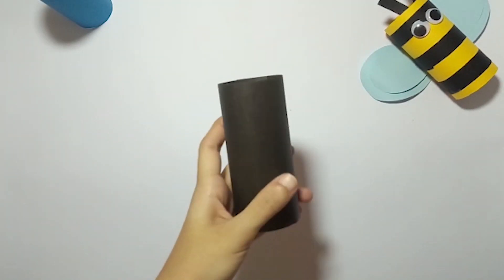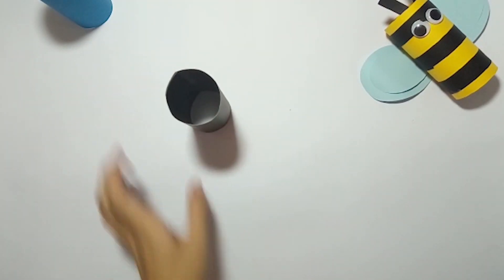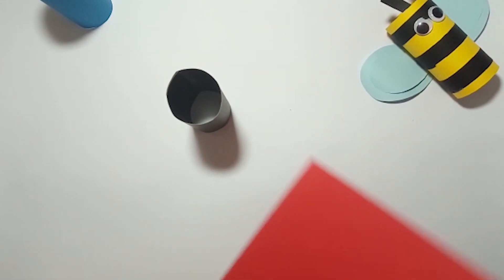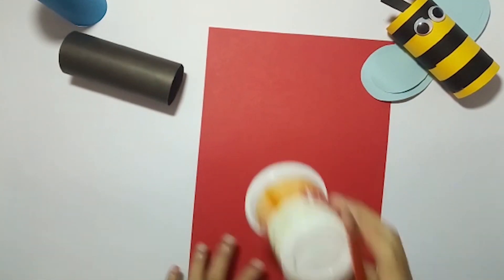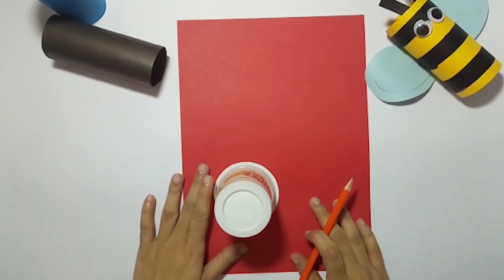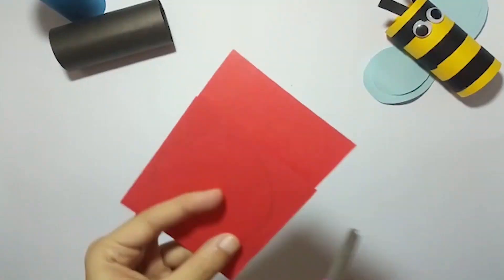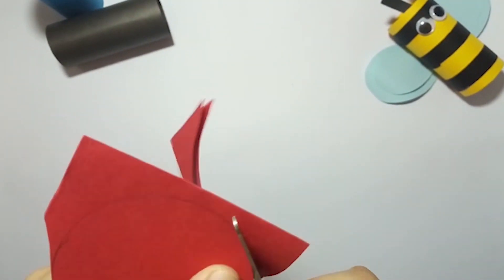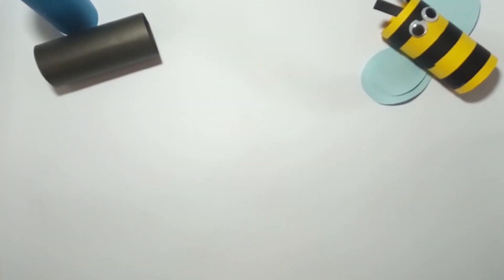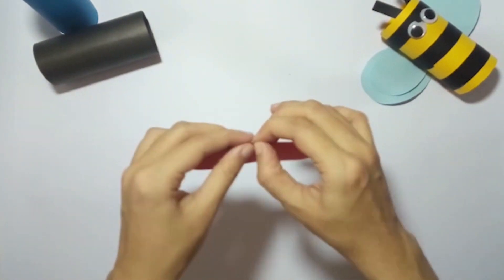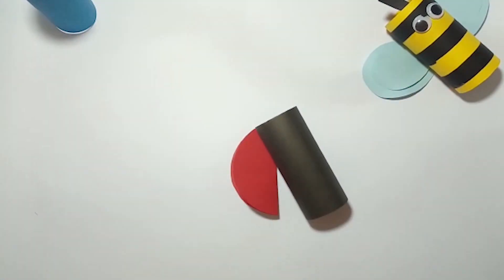Let's make another one. Now take a black roll. Cut two circles of red paper. Now fold it from its center. Paste it on the roll.